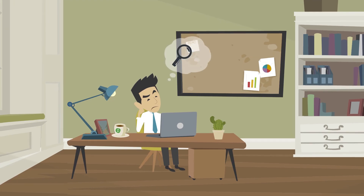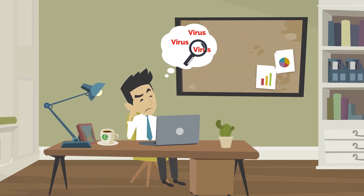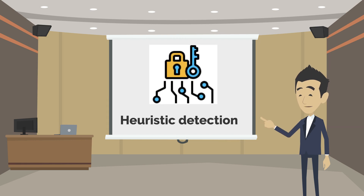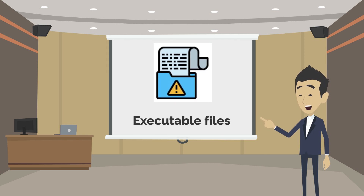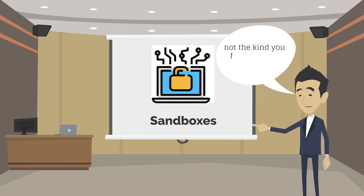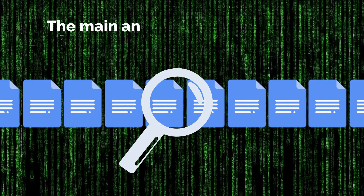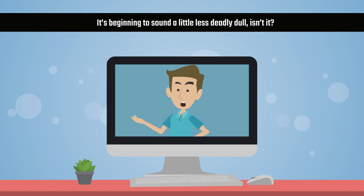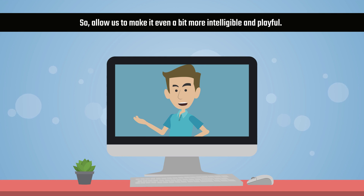It turns out there's a whole world about your antivirus that you've never even stopped to think of: specific detection, generic detection, heuristic detection, signatures, behaviors, executable files, sandboxes — not the kind you find in toys and game stores — data mining, and baby steps toward machine learning. The main antivirus scan types and detection mechanisms. It's beginning to sound a little less deadly dull, isn't it? So allow us to make it even a bit more intelligible and playful.